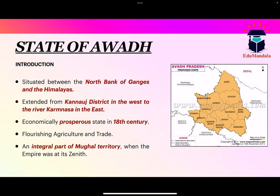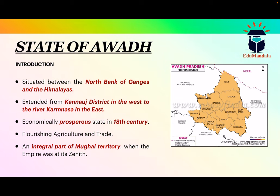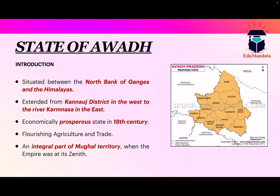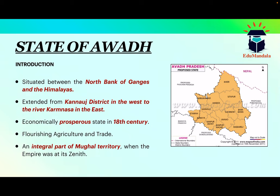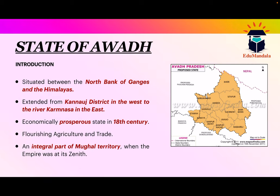Let's start with an introduction to Awadh. The State of Awadh was situated between the north bank of the Ganges and the Himalayas — this forms the north-south boundary. The western boundary was formed by the Kannauj district, and the River Karmanasa formed the eastern boundary of Awadh.